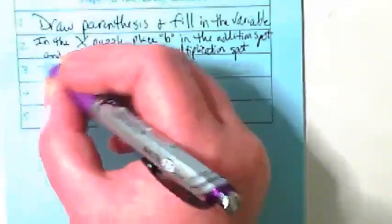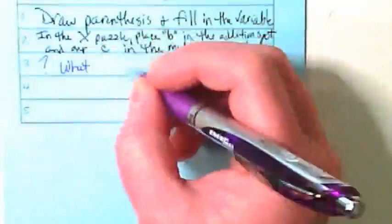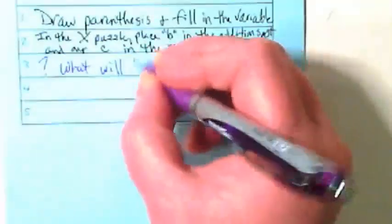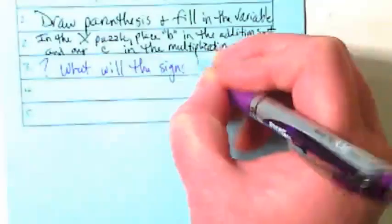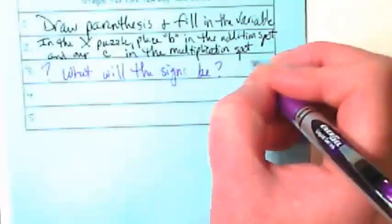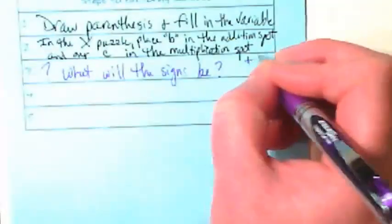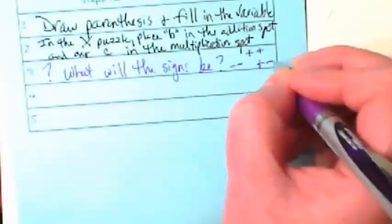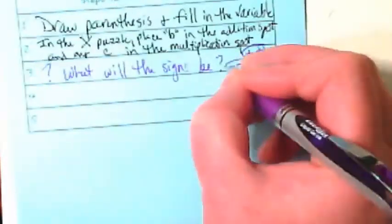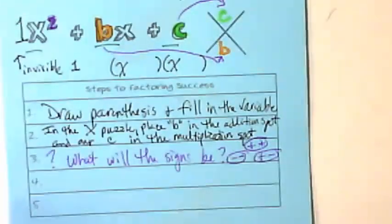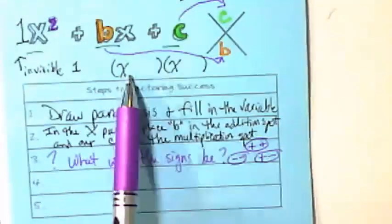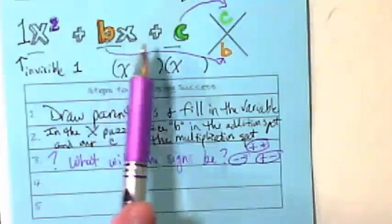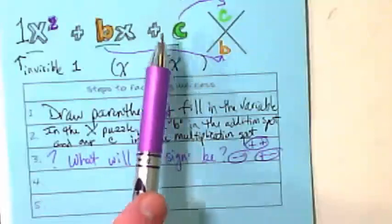Alright. Step three, we have to ask ourselves a question here. What will the signs be? We're either going to have two additions, two subtractions, or an addition and a subtraction.